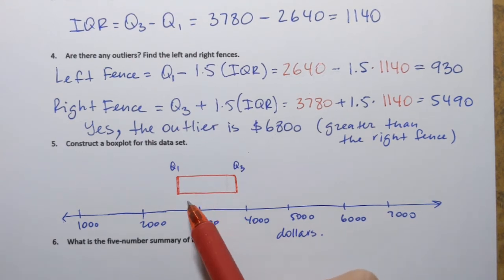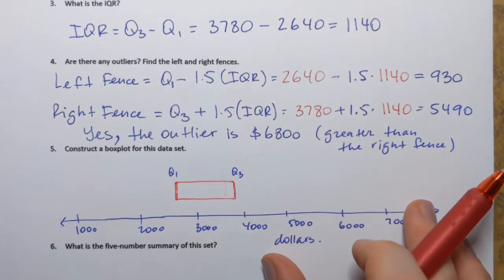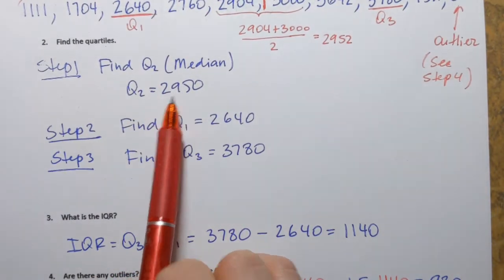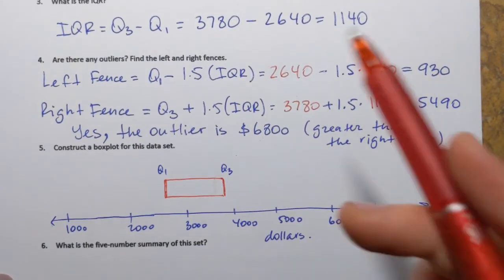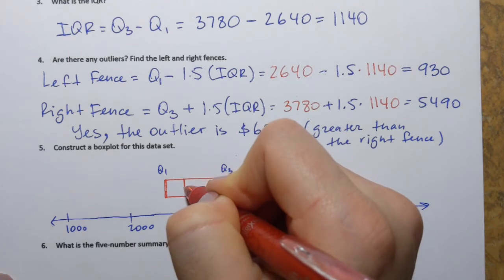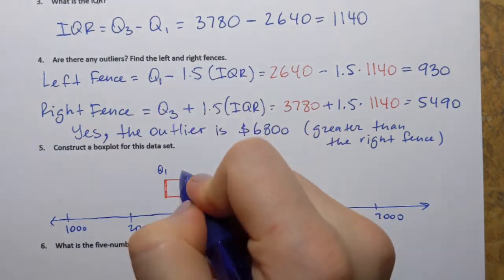And now within the box, I have to denote where the median is, which is Q2. So we found that median is 2,950. Well, almost 3,000. So that means that I'll have to place it here. That's Q2.